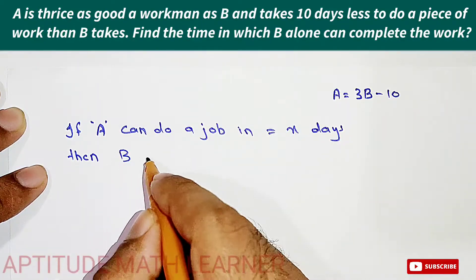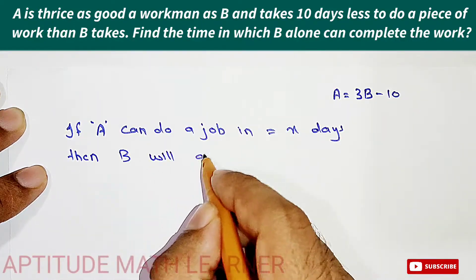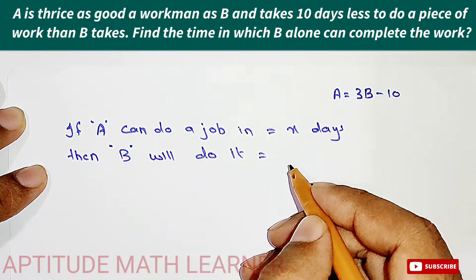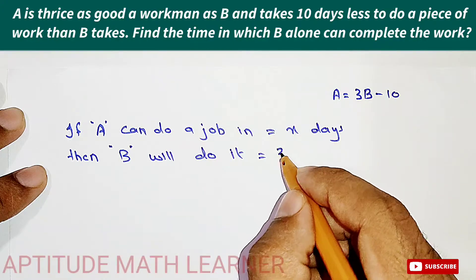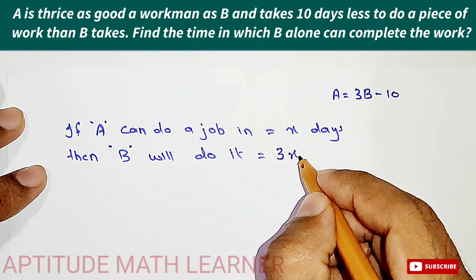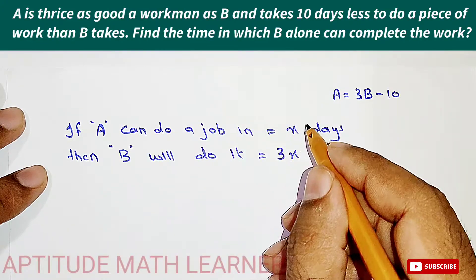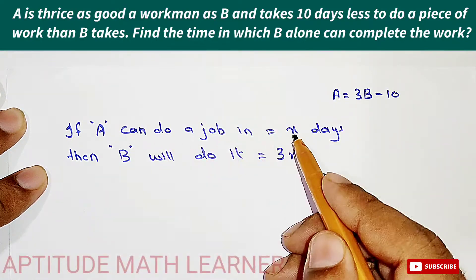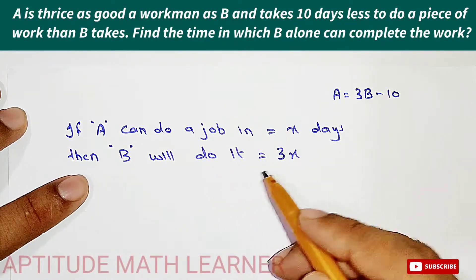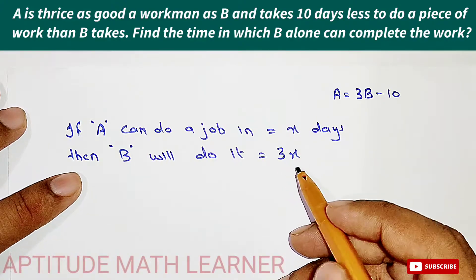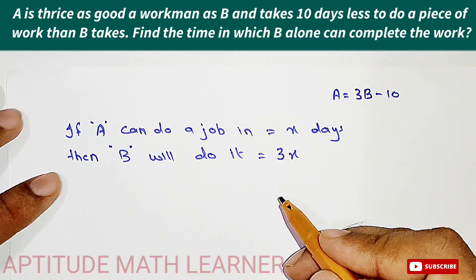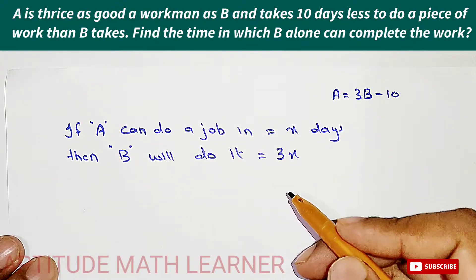Then B will do it in how many days? B will do it in three times, because A is more efficient than B. So if A completes in x days, then B will complete it in three multiply by the days of A.